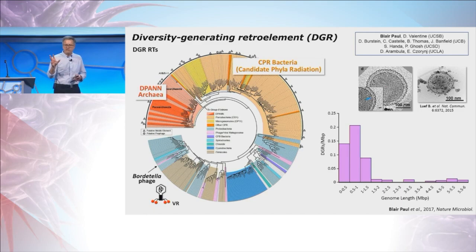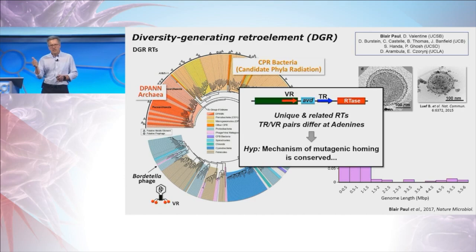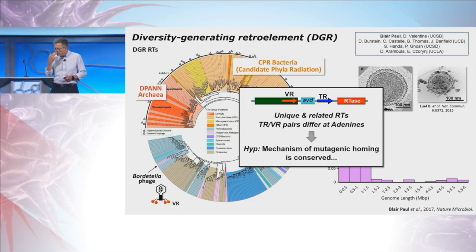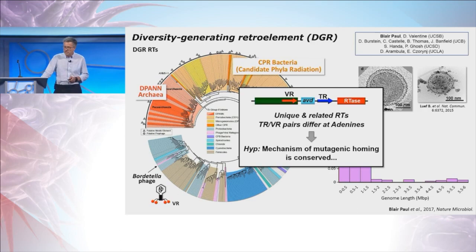The distribution is vast, but everywhere we look — whether it's in an archaea, a CPR bacterium, Legionella, or a phage — they have characteristic unique related reverse transcriptases and TR-variable region pairs that differ at adenines. The hypothesis is that the fundamental mechanism of diversity generation is conserved across what appear to be vast phylogenetic distances.